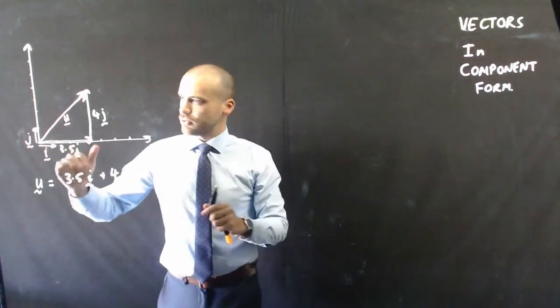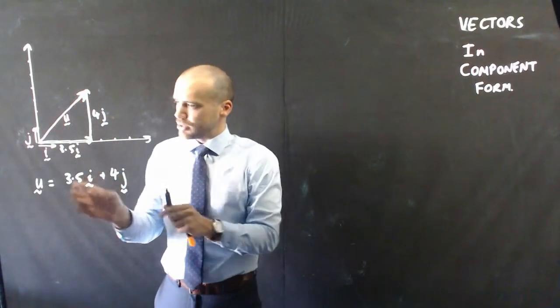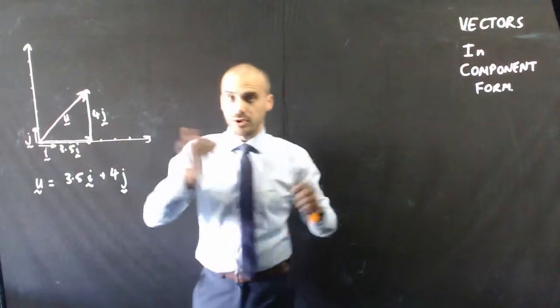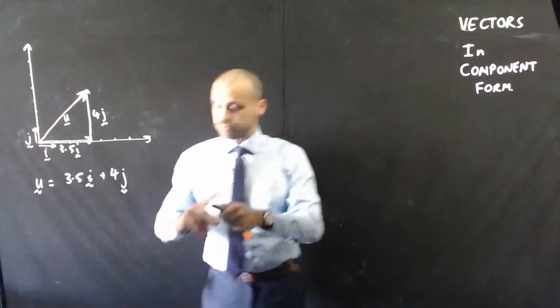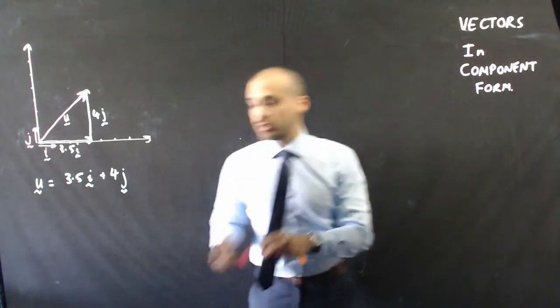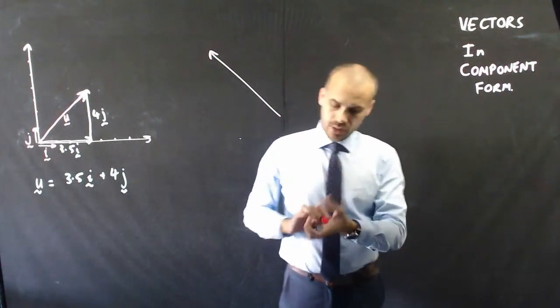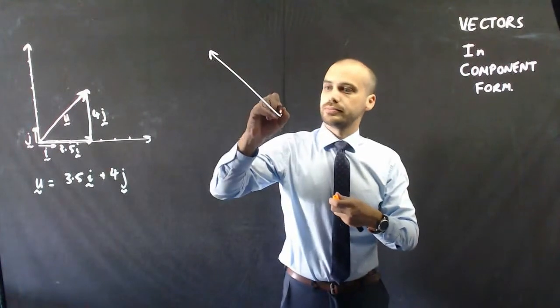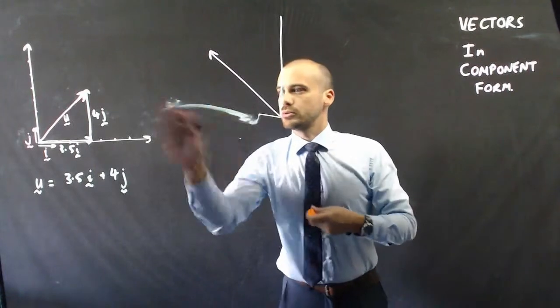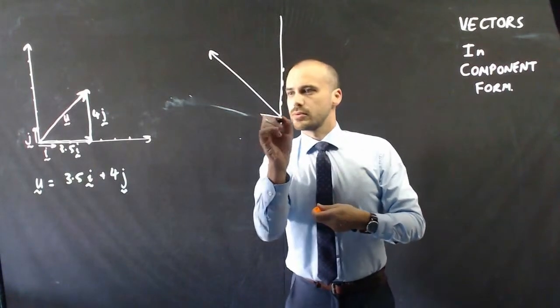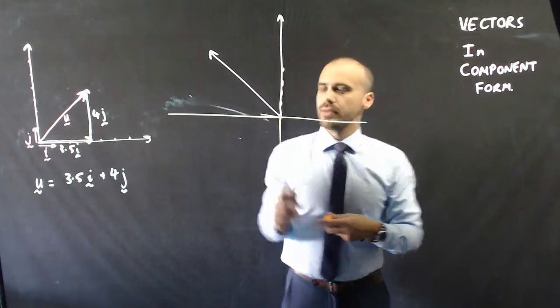So, all component form does is take a vector that's on an angle, and allow us to talk about it in terms of how far across do you have to walk, and how far up do you have to walk. Let's do one more, just so we got this really clear. If I were to do a vector that looked more like that. I'll just draw a Cartesian plane, not dotted lines, let's do a proper line.